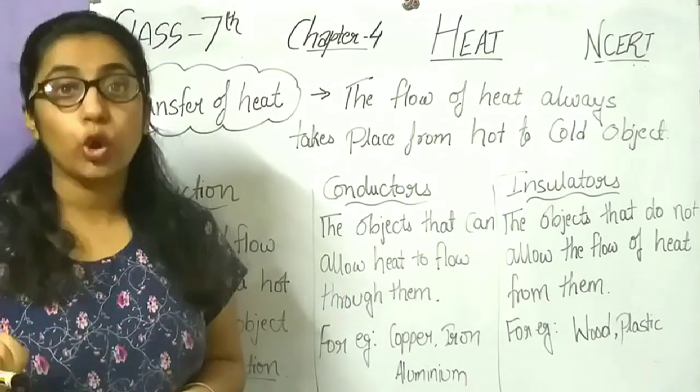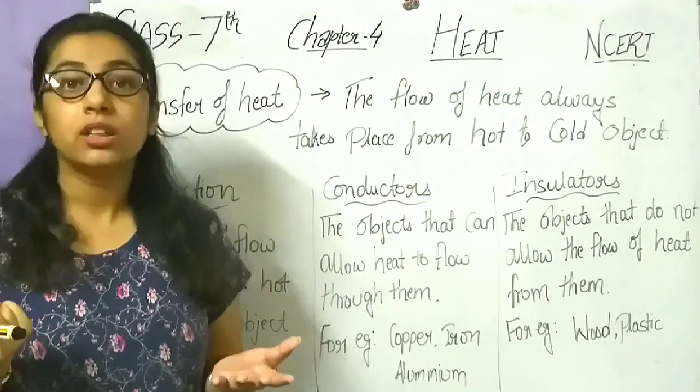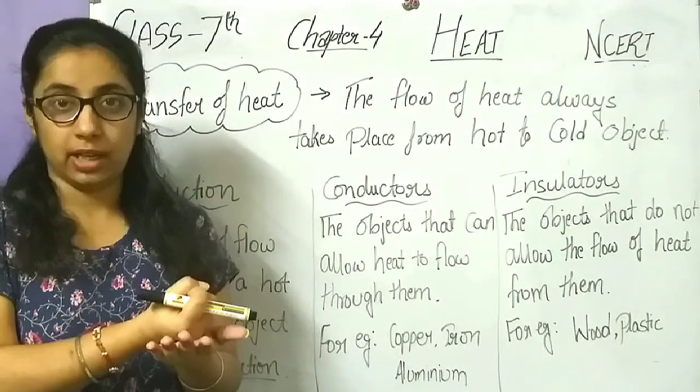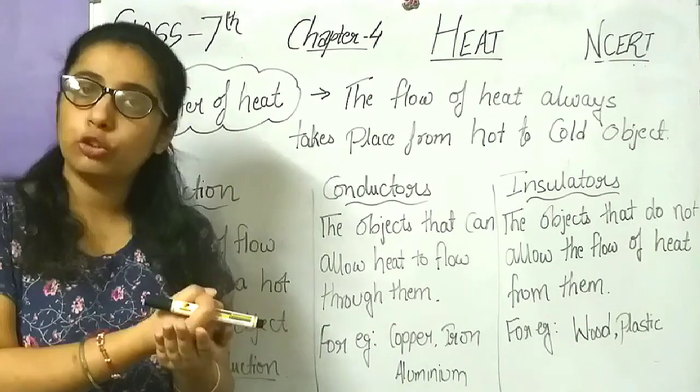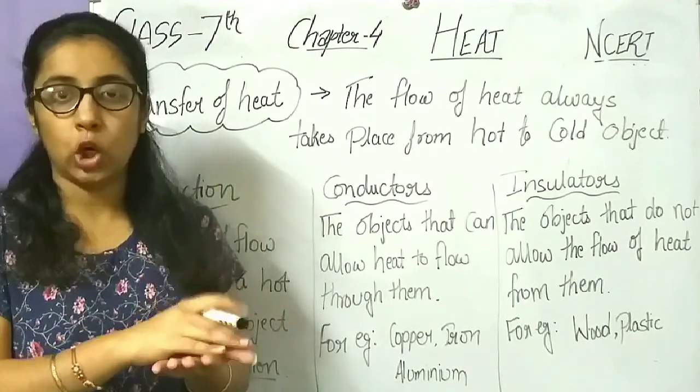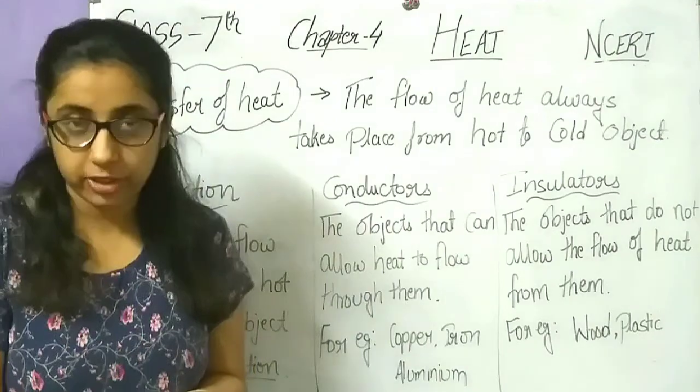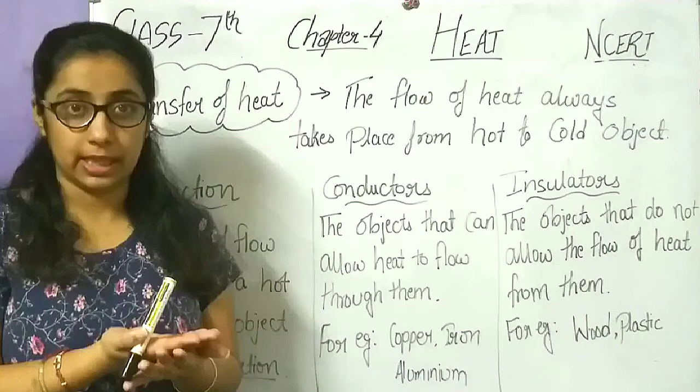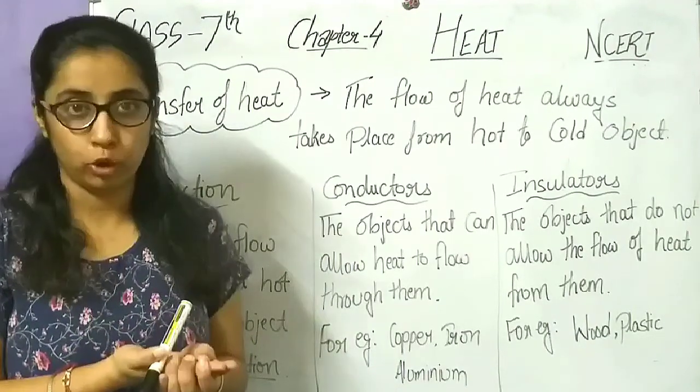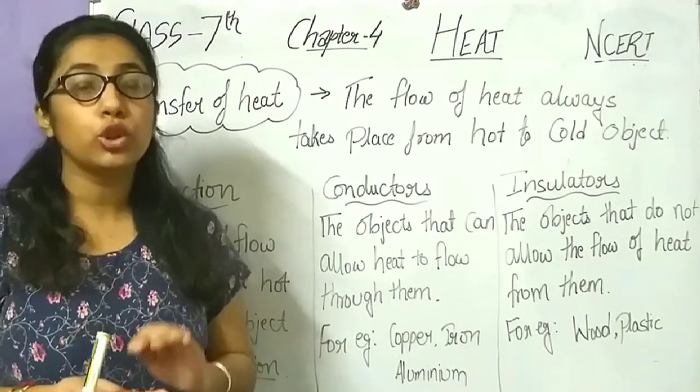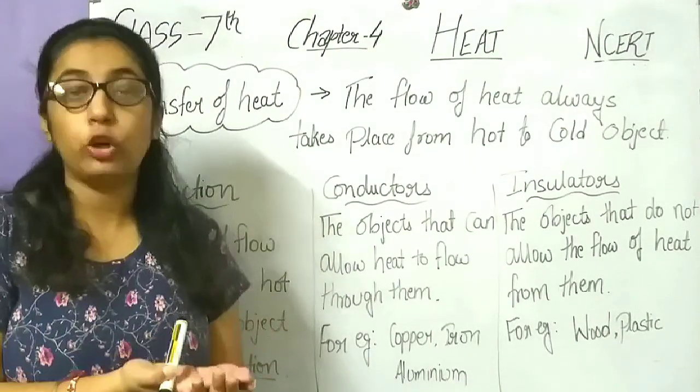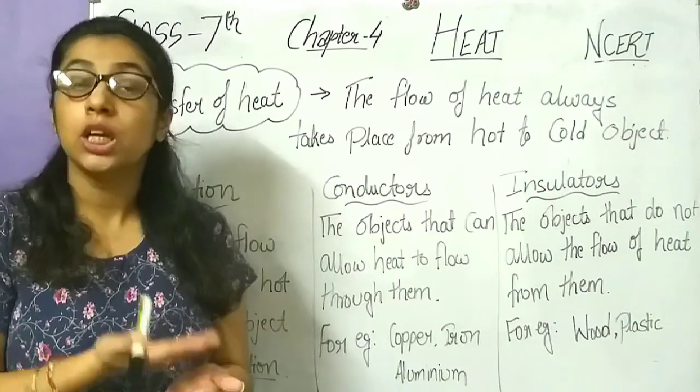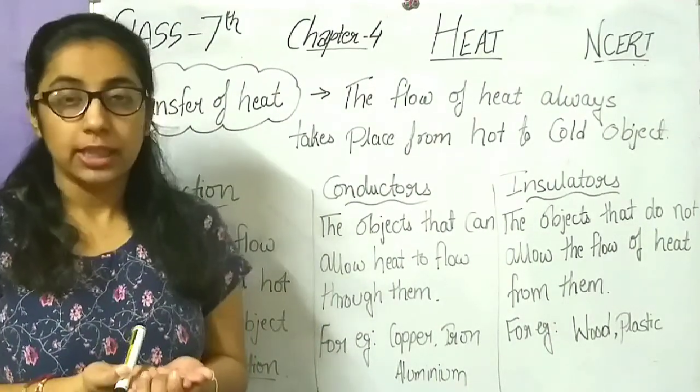The utensil you place is a cold object, and the flame burning is your hot object. So you placed the cold object on the flame. Initially it will be cold. But if you check after five minutes, the utensil or fried pan you placed will become hot. It becomes a hot object because the heat from the flame transferred to the cold object.